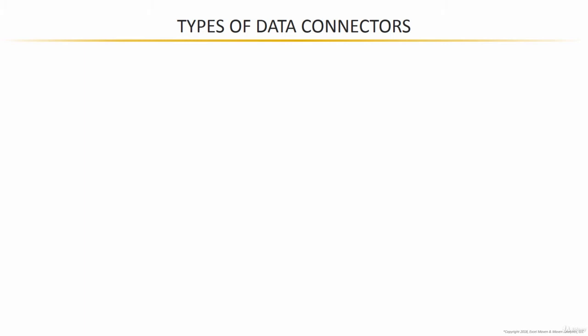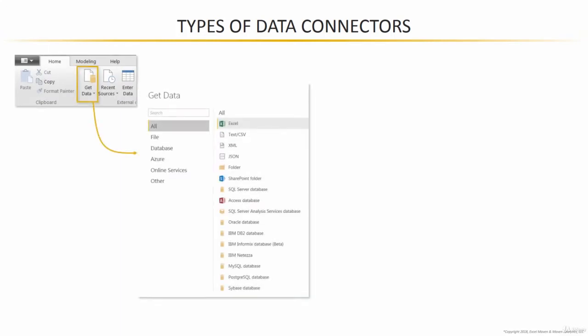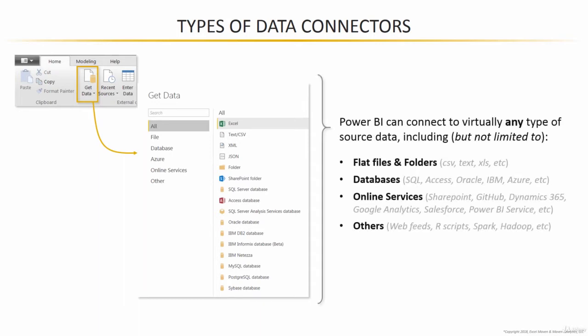Let's kick things off and talk about data connectors, because Power BI has a really robust connector library that allows you to access data from virtually anywhere. You can connect to just about any type of source data, including flat files, Excel workbooks, folders, databases like SQL, IBM, Azure, online services like GitHub and Salesforce, or other sources like web feeds, R scripts, Hadoop, and so on. Tons of options for connecting to data.